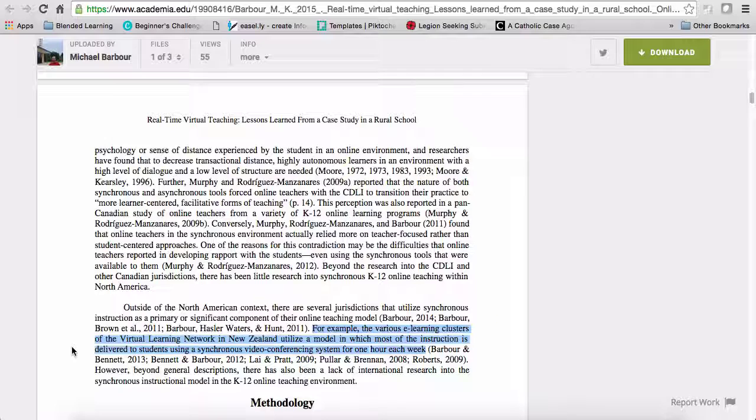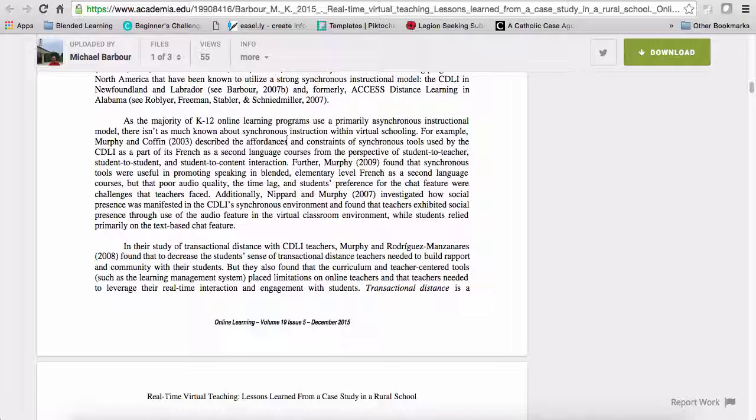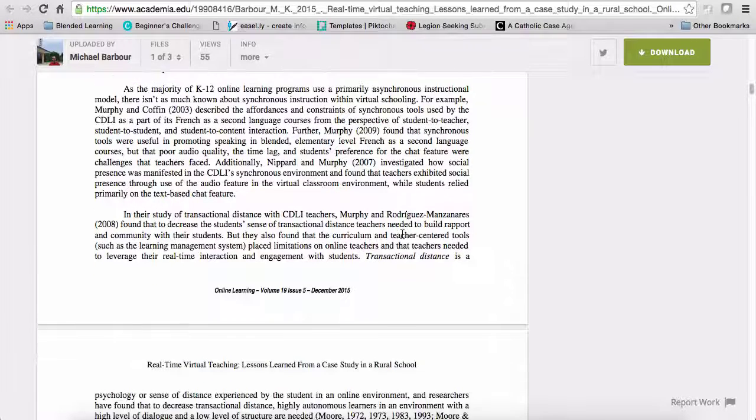Now, what I might do if I were writing this as a thesis study, so essentially if I had much more space, this here would still be a good topic sentence. And then I might say something along the lines of New Zealand is one of those jurisdictions that do utilize synchronous instruction as a primary or significant component for their online teaching. I could still cite these folks, but what I would likely do then is say for example, and then I might tell you about the things that Barbara and Bennett and Bennett and Barbara found, because they're both the same set of authors so they might be talking about the same things. Then I might say similarly, Robert's found these things or discussed these things.